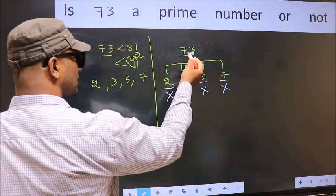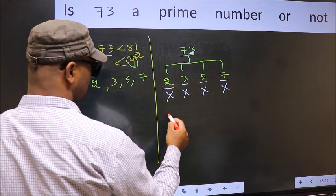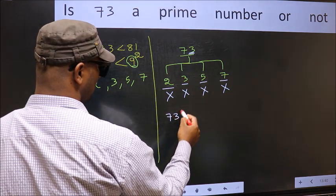So 73 is not divisible by any of these numbers. Hence 73 is the prime number.